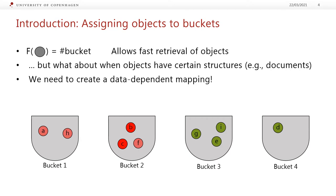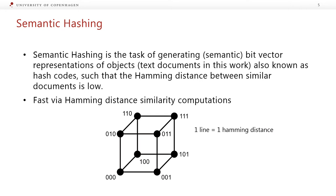To ensure this, we need a data-dependent mapping, so we can no longer use a simple hash function where the object is mapped randomly. Instead, we need to learn the hash function such that objects in the same class share some kind of similarity. Semantic hashing is the task of generating a semantic binary vector representing the objects — in our work, text documents — which we denote as a hash code. We wish to ensure that the Hamming distance between similar documents is low.